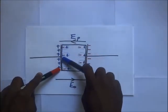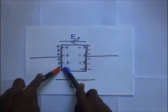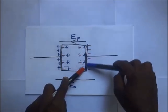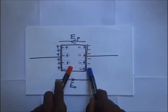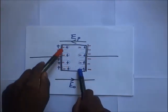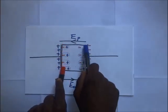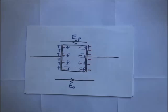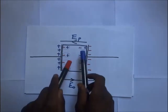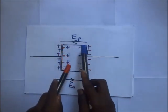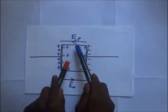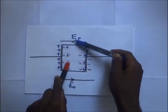The positive plate induces negative charges on the near surface of the dielectric through polarization of the molecules, and the negative plate induces positive charges on the far surface. So the dielectric is polarized with negative charges on one surface and positive charges on the other, creating field E_p acting in the opposite direction to the plate field.